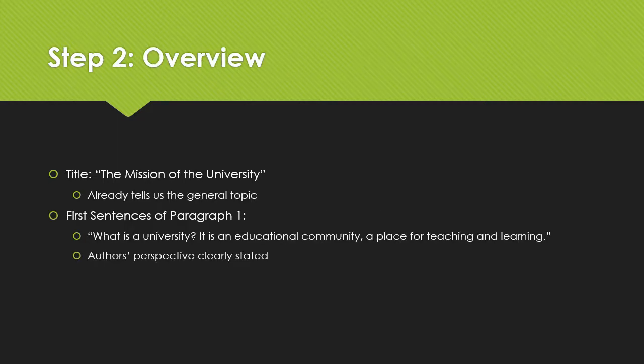Now let's go on to step two: the overview. The title of the paper already gives us a sense of the general topic — the mission of the university — so we know the authors will probably be defining what they see as that mission. The first sentences of paragraph one give us their perspective and basic definition. It says, 'What is the university? Is it an educational community, a place for teaching and learning?' So we already have the author's perspective and at least part of their thesis.